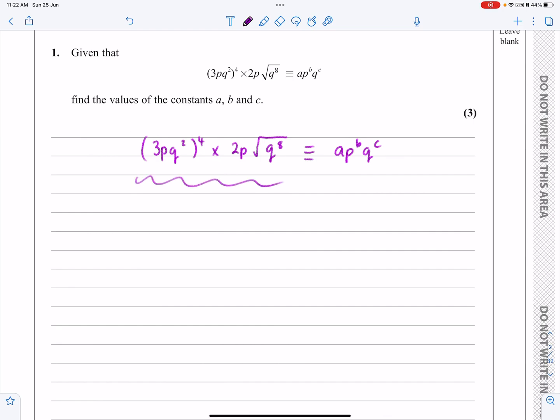Right, so I know what to do. I'm going to take the left-hand side, apply all my index laws to it, and I'll get something that looks like the right-hand side, and I'll be able to just compare them.